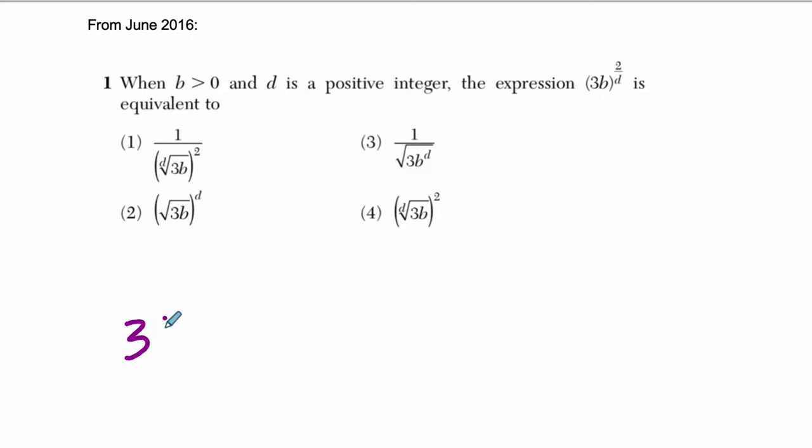Alright, so there's a lot to unpack here. We've got 3b to the power of 2 over d. That's what we're dealing with. What does this even mean?